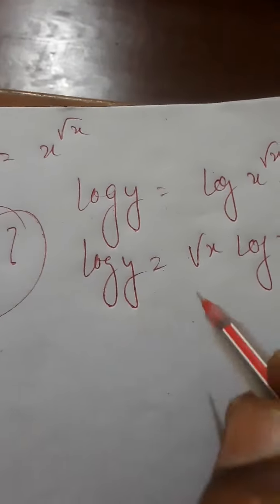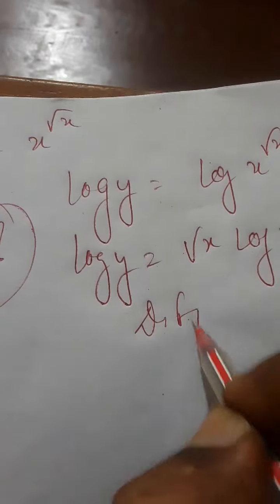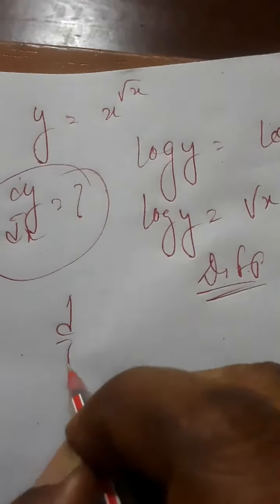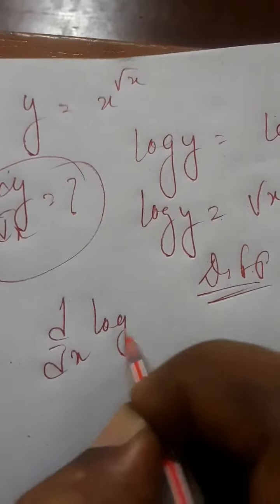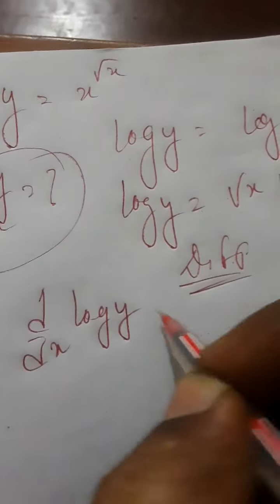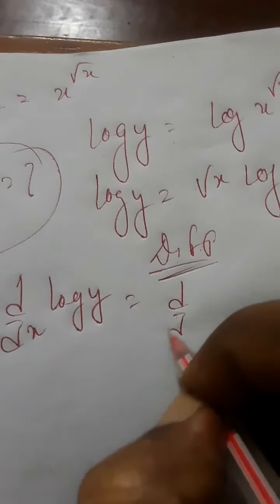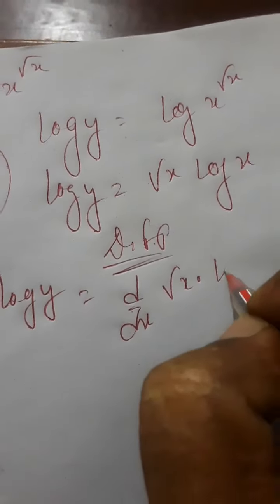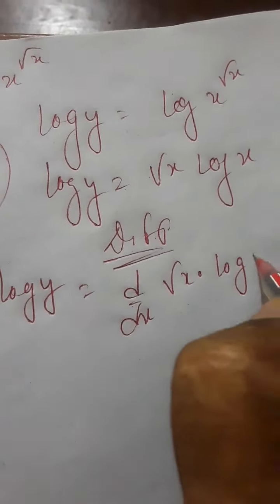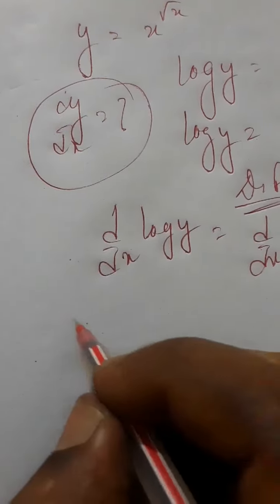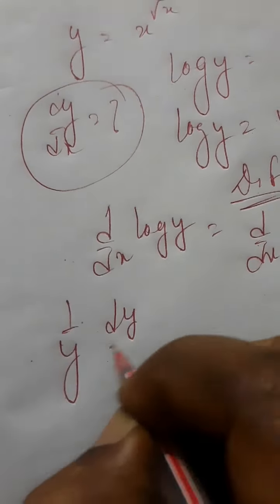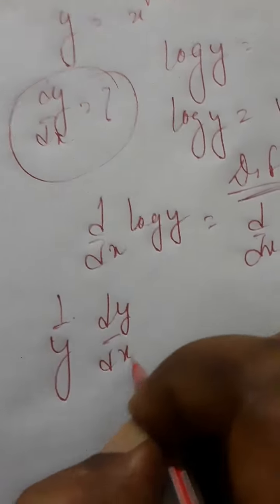Now let's differentiate this equation. Differentiating both sides, d by dx of log y is equal to d by dx of root x into log x. Now d by dx of log y becomes 1 by y into dy by dx.